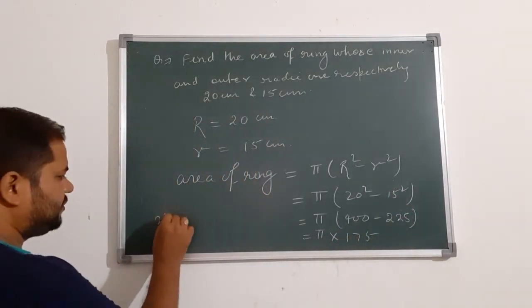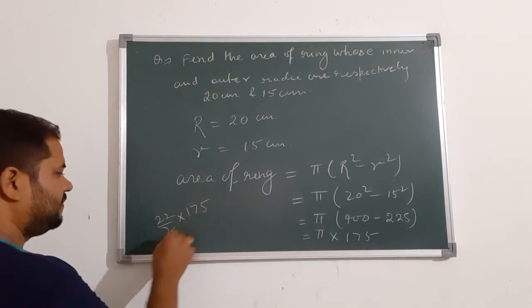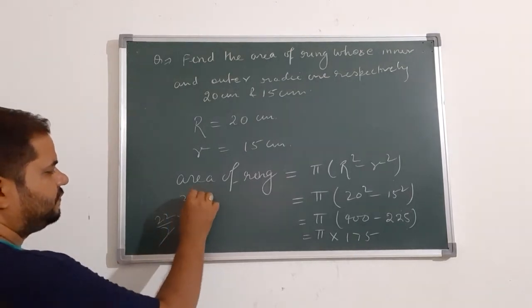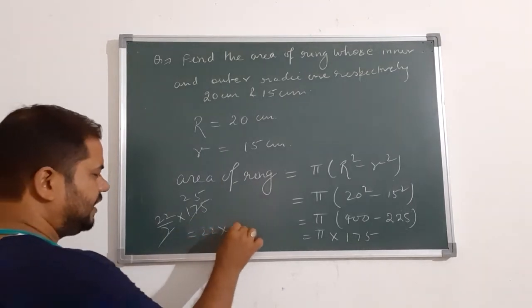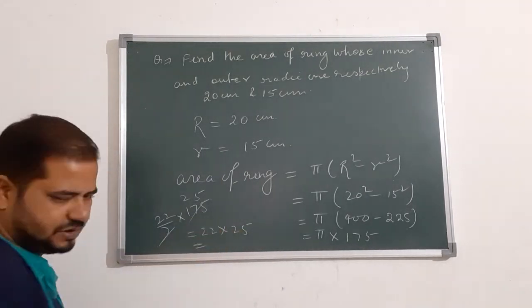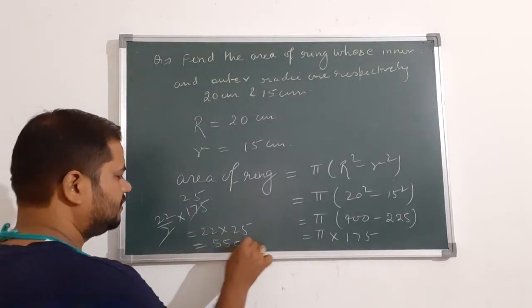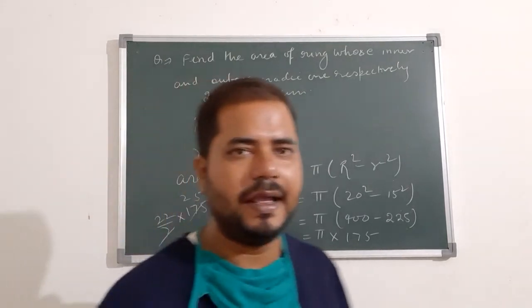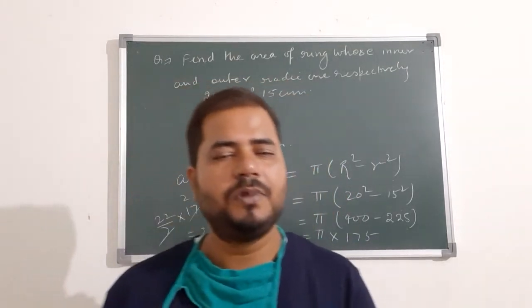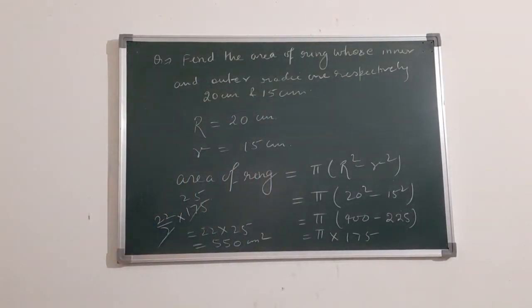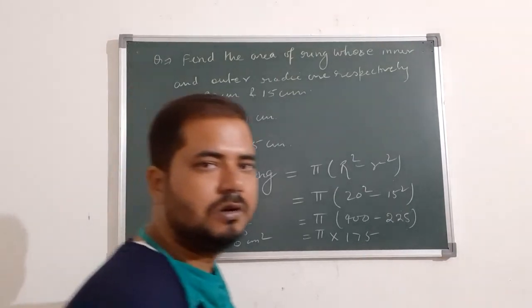So π is 22 by 7, it becomes 175. 22 into 25. So this is your answer. So answer is 550 centimeter square. This is the area of ring. Now please note it down, then next question you have to see here.